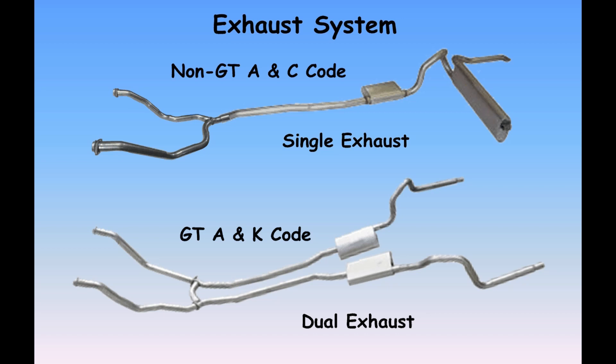In the base car, that car is going to come with a single exhaust system. To get the dual exhaust system you've got to order the GT option package, and that also requires either the A-code or the K-code engines. So: base car with A-code or C-code gets single exhaust; dual exhaust requires the GT with the A or K code.